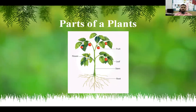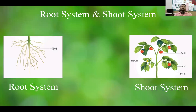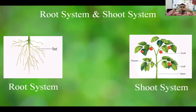Now we are going to see the parts of plants. There are a number of parts: root, stem, leaf, flower, and fruit. We are going to see each part in detail. The parts of a plant are divided into two systems. The first is the root system — the parts that grow underground. The second is the shoot system — the parts that grow above the ground.